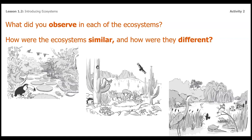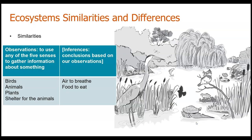Now that you've taken a look at those pages — if you haven't, you might want to pause the video — what did you observe in each of the ecosystems? How are they similar and how are they different? I noticed in all three pages that there are birds, different kinds of animals, different kinds of plants, and shelter for the animals. I also made some inferences. An inference is a conclusion based on our observations, and scientists try to keep those two apart, but sometimes it's really difficult.